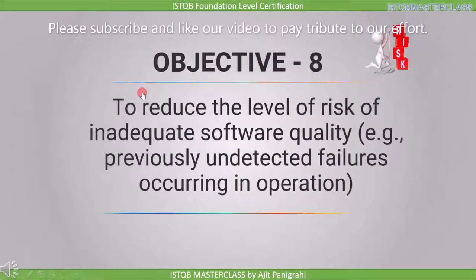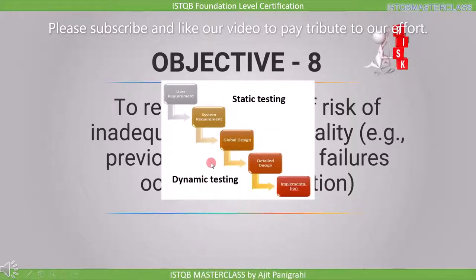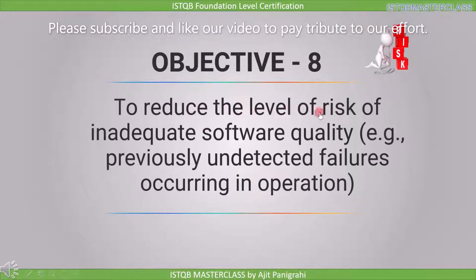The eighth objective is to reduce the level of risk of inadequate software quality — that is, previously undetected failures occurring in operation. This objective is related to objectives 5 and 6. We need to find defects in the same stage in which they are introduced; otherwise they will be found during operation. If a fault is found during operation it can have adverse effects, and that is why it is necessary to reduce the level of risk of inadequate software quality.